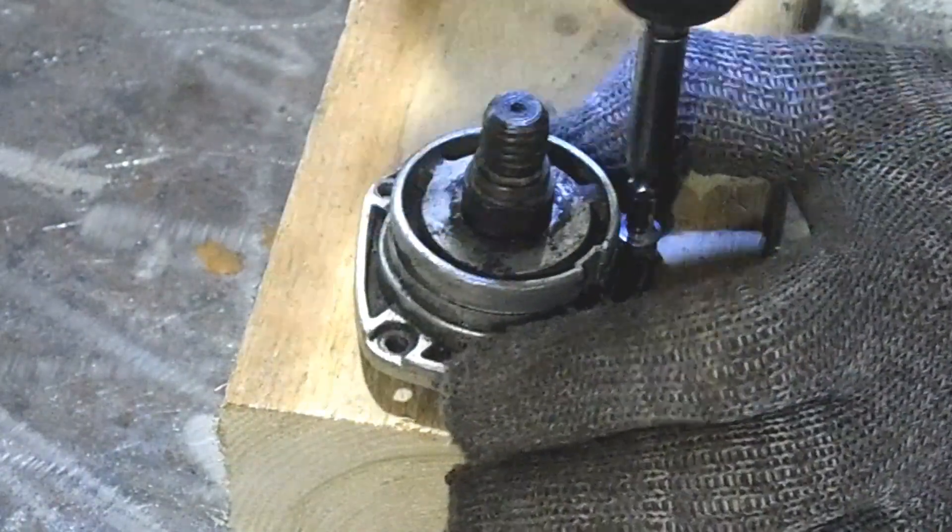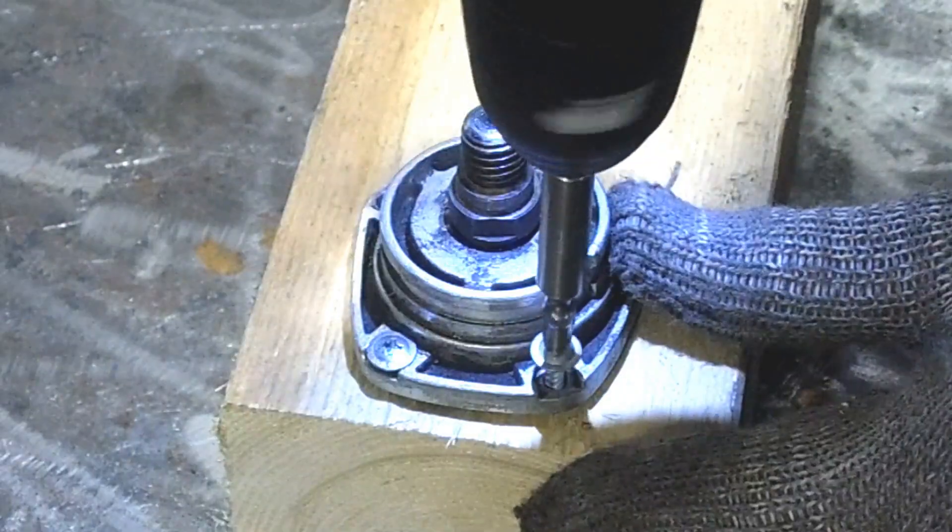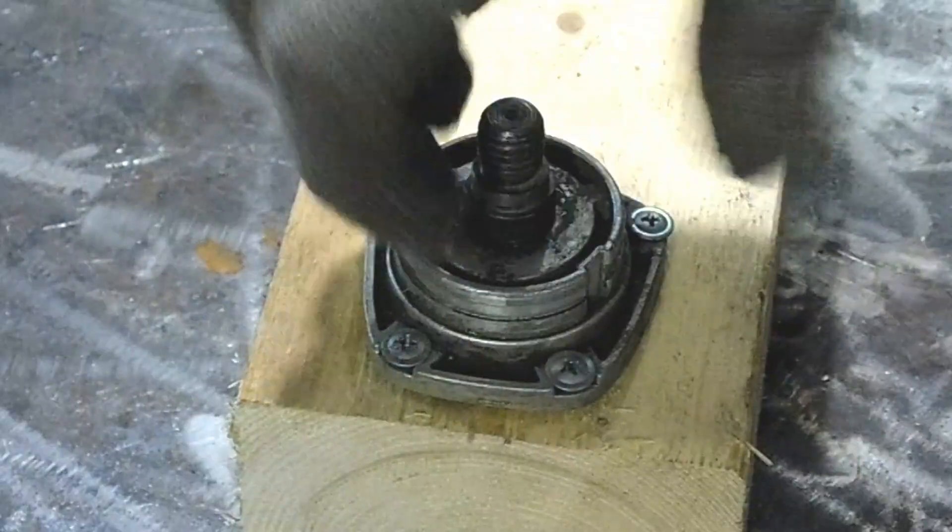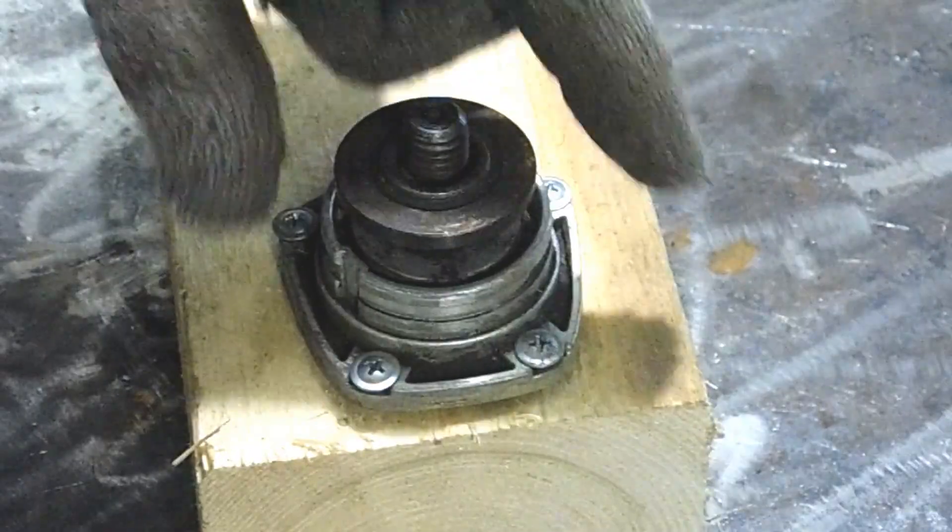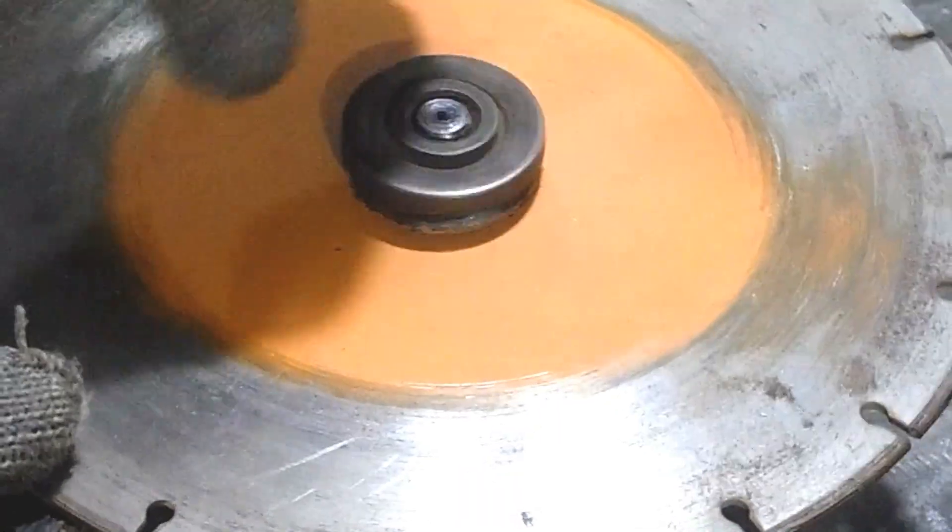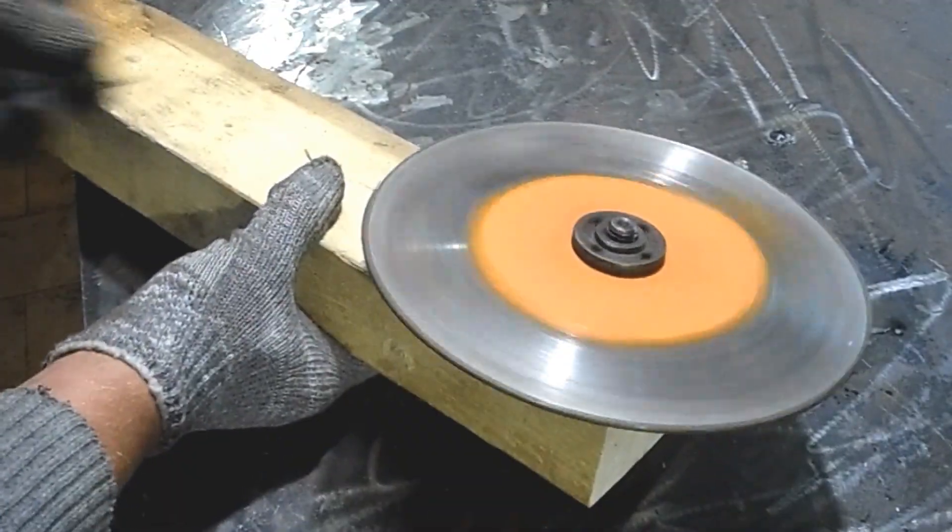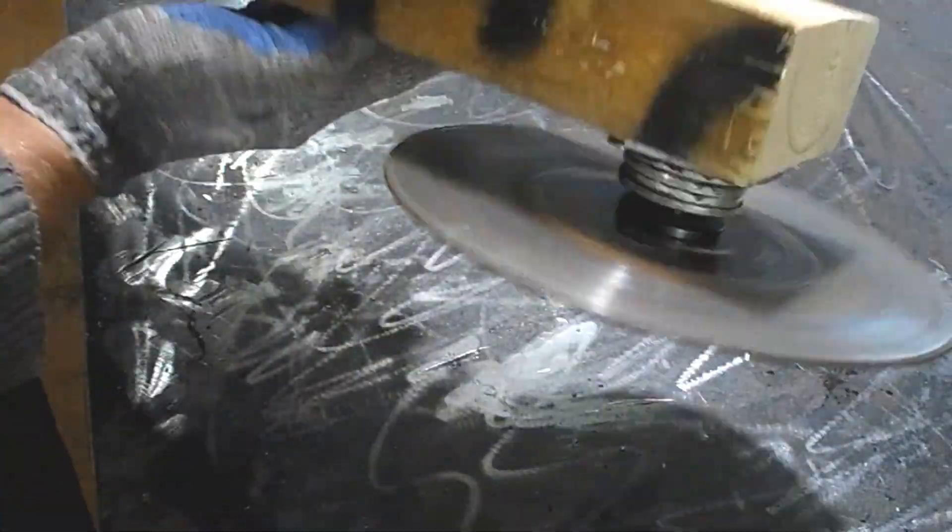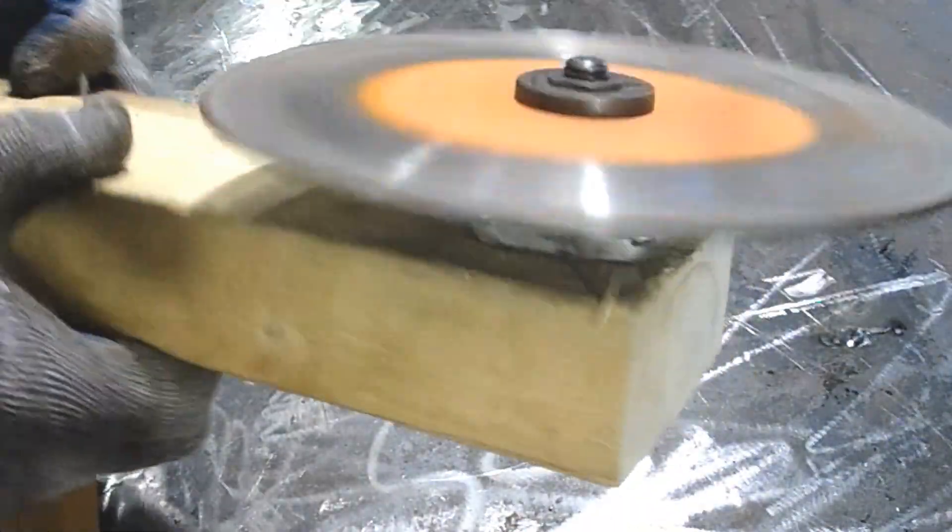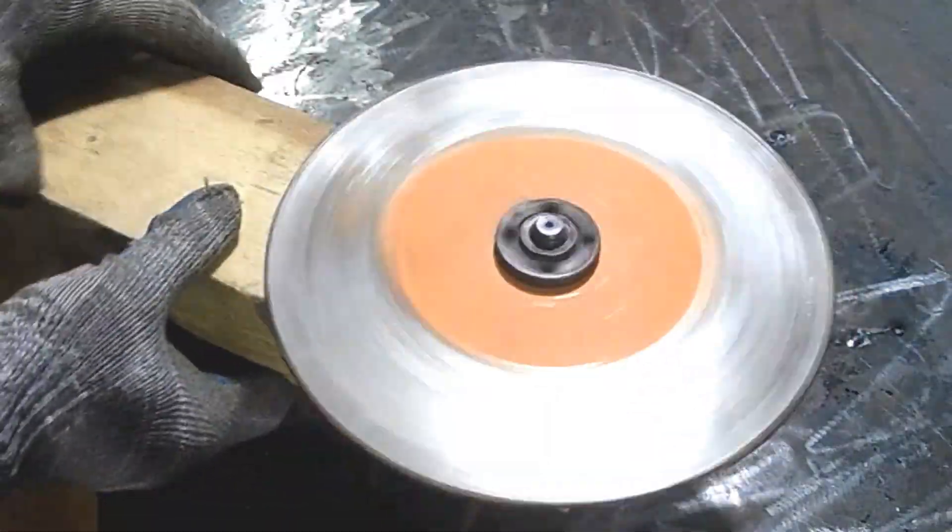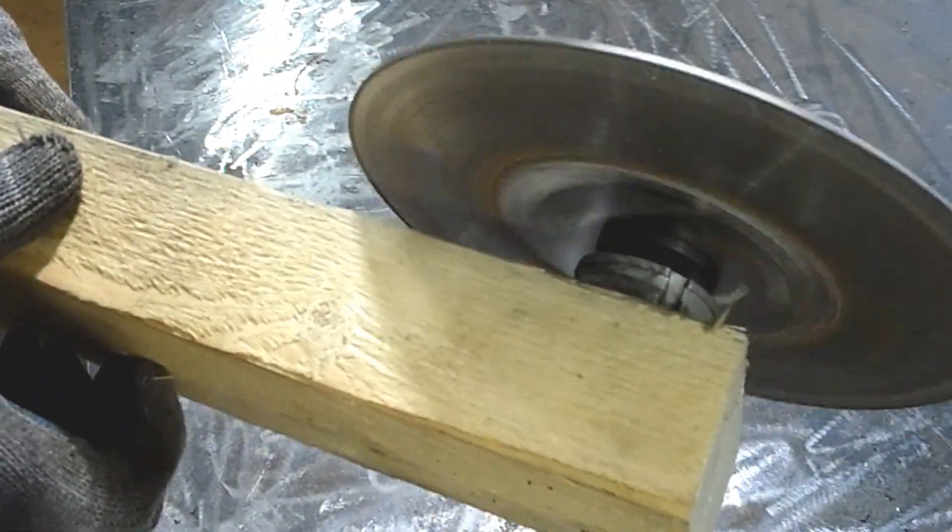I screw the gearbox to the stand with four screws. I use long enough screws to prevent the mechanism from loosening during the process. Nothing sticks, and now I can try rotating the gearbox. To do this, I place an identical used angle grinder disc on the mounting plate, tighten it with a nut, and check how freely it rotates. The result is very good. The disc rotates very easily and smoothly.